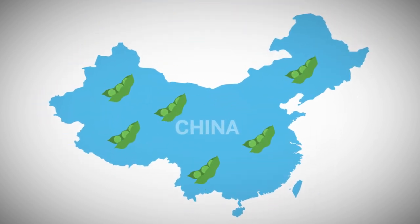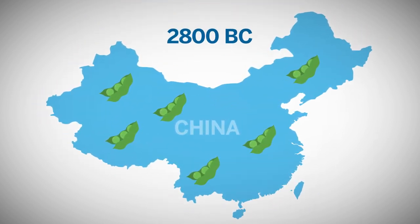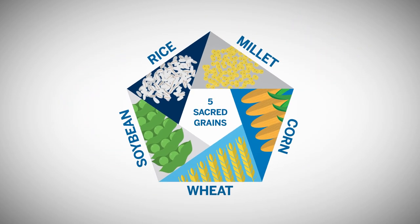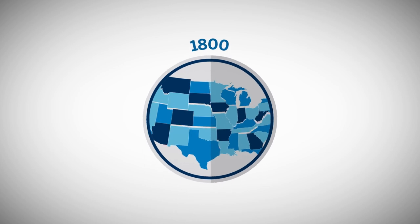Soybeans were cultivated as long ago as 2800 B.C. in China, where it was considered one of the five sacred grains. The soybean was introduced in the U.S. around 1800.